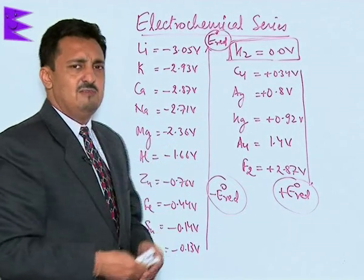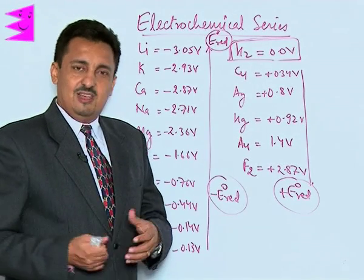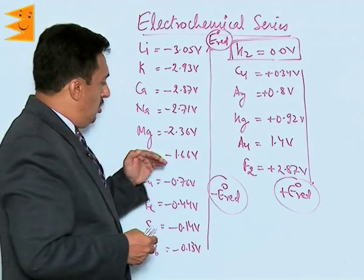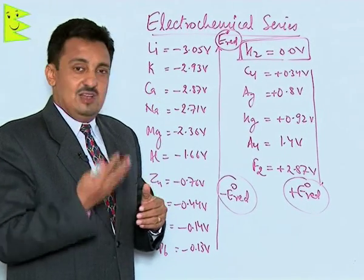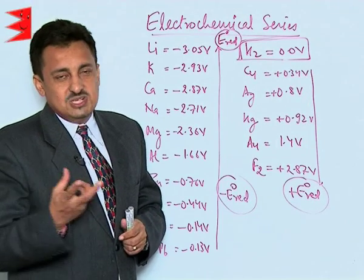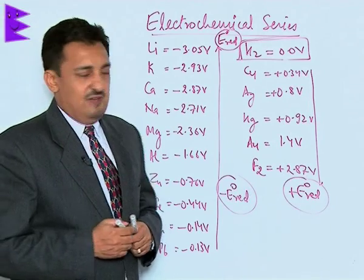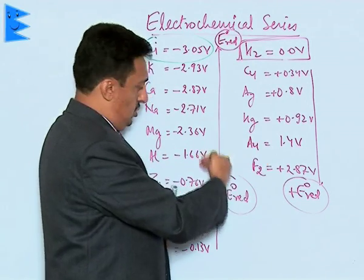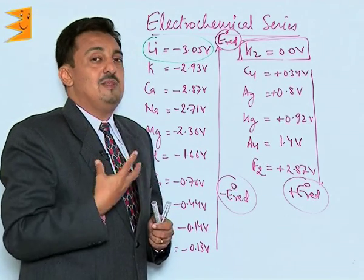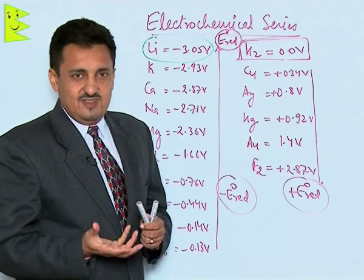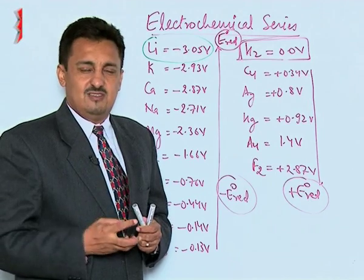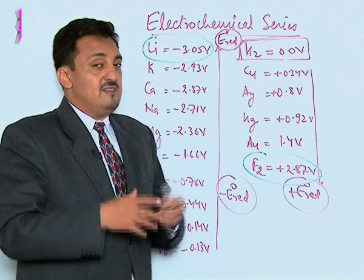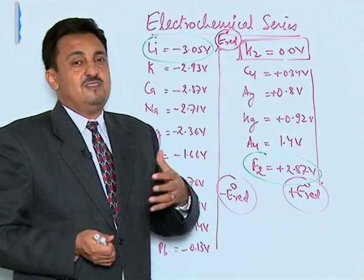The first application of the electrochemical series is comparing relative reactivity. The lower the E0 reduction value of any species, the higher its ability to lose electrons, making it a better reducing agent. Therefore, the strongest reducing agent is lithium. Conversely, the higher the E0 reduction value, the greater the ability to accept electrons and get reduced, making it a better oxidizing agent. The strongest oxidizing agent — able to take electrons from any other species — is fluorine, which is why fluorine is the most reactive non-metal.